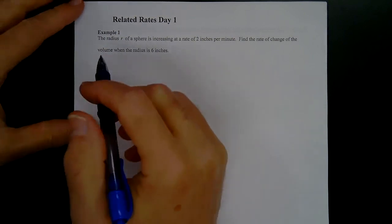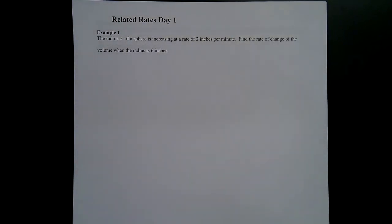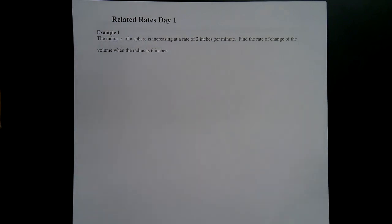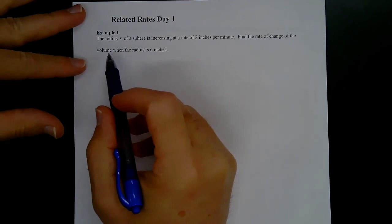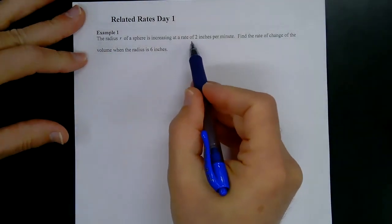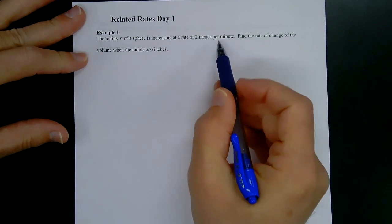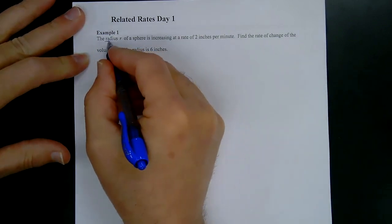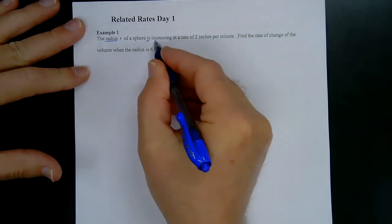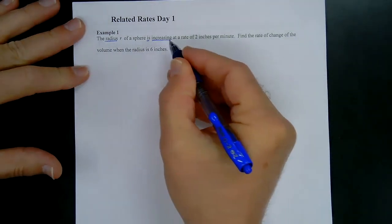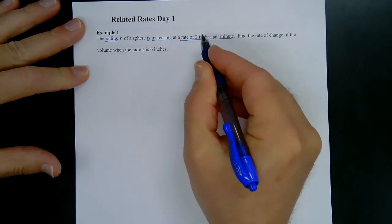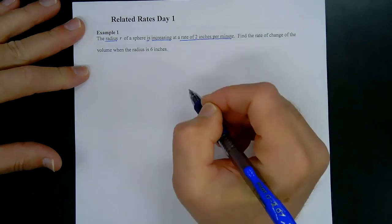We'll just jump in and start doing some problems. The radius r of a sphere is increasing at a rate of two inches per minute. We're talking about the radius of a sphere — basically a ball — and it's getting bigger. Because this is a rate, that is a derivative.